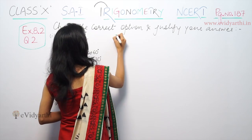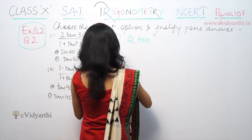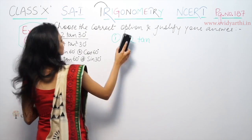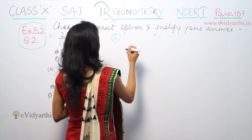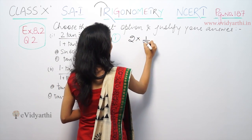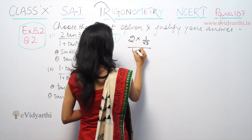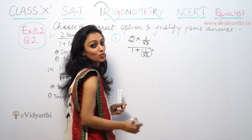So, first part: 2 tan 30 degrees. You get 2 into 1 by root 3, upon 1 plus tan squared 30, which is 1 by root 3 whole squared.